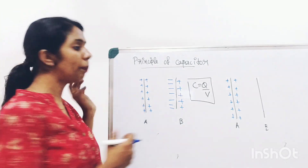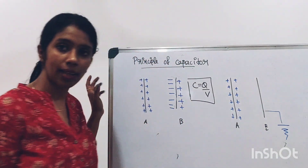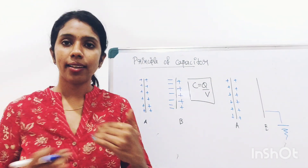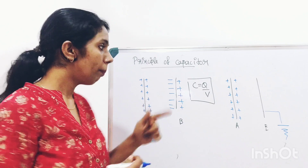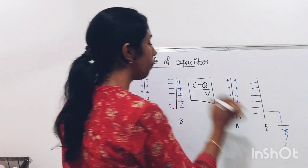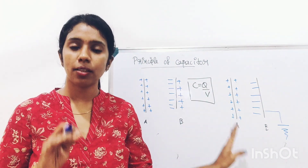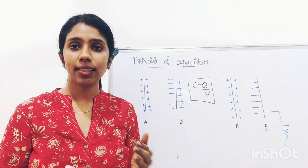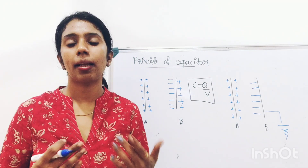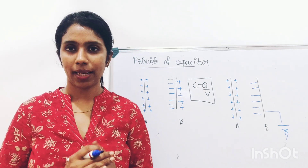Now, if I earth plate B, all the positive charges get neutralized, because when B is earthed, electrons from the earth flow to plate B. But the negative charge is held in place by the positive plate A. So now there is only the presence of negative charges on plate B. As a result, the potential decreases by a large amount, and the capacitance increases significantly.